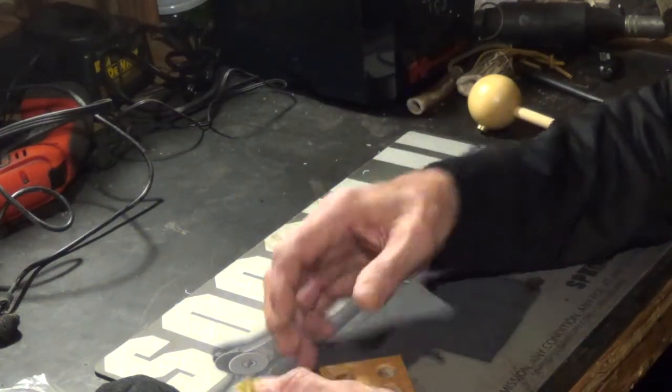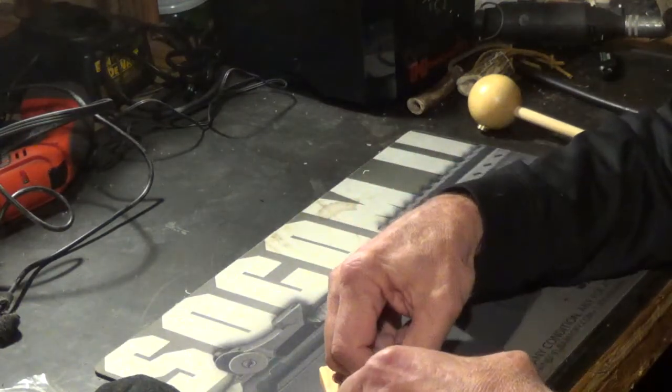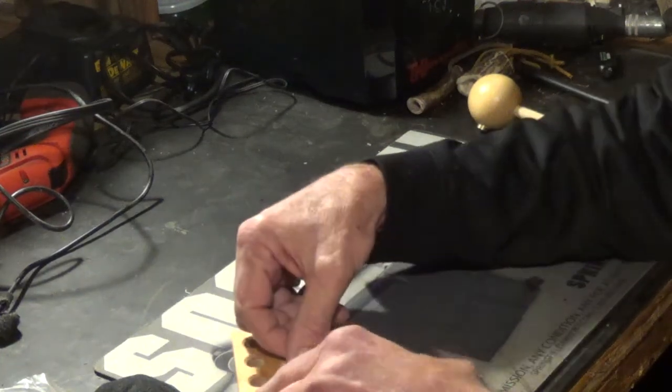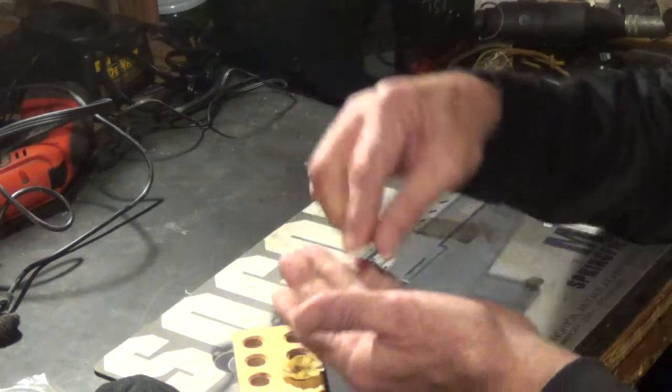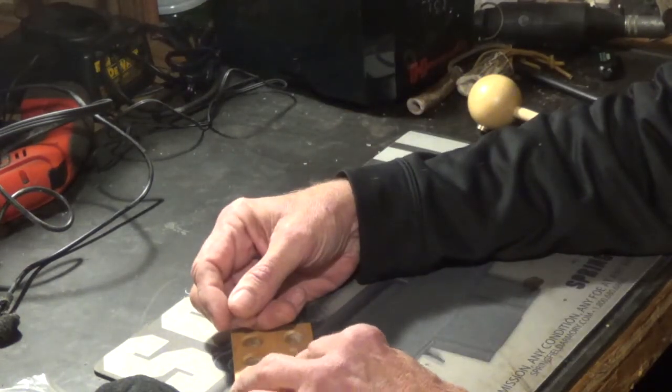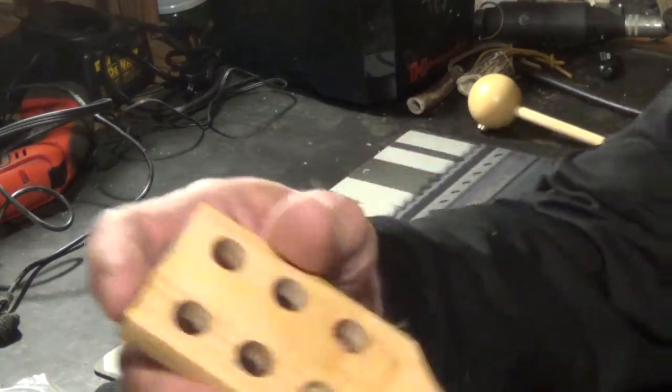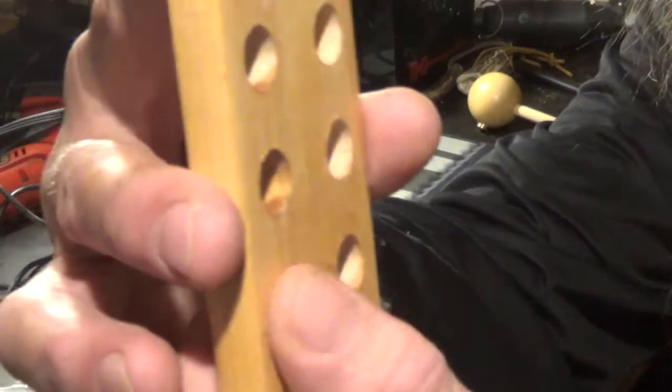So what you're going to do, you're going to take—in this case this patch is already pre-lubed. I'm going to center that patch over that hole, put the ball on it, and I'm going to press down until that ball comes out the bottom, just a little bit like that right there.